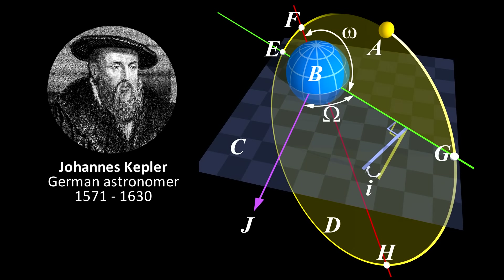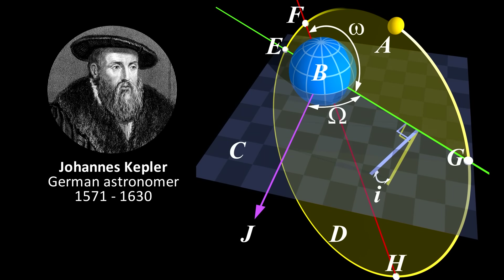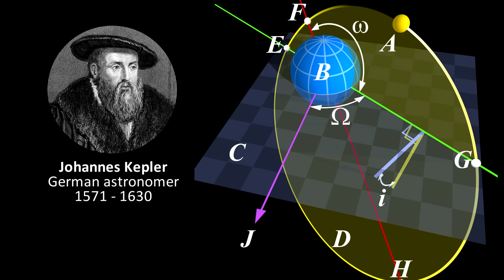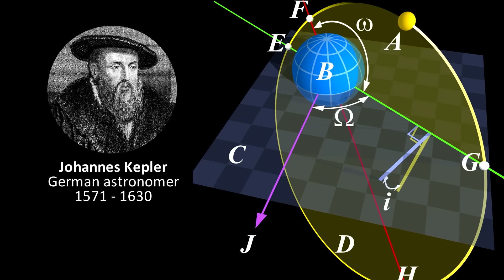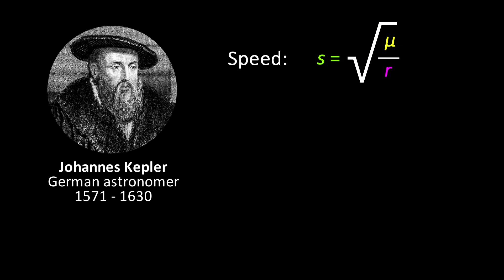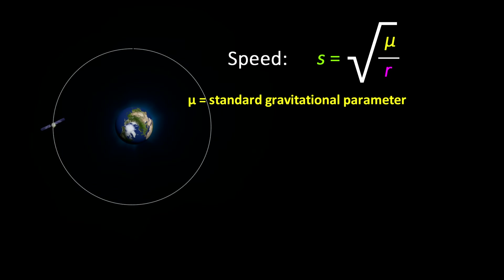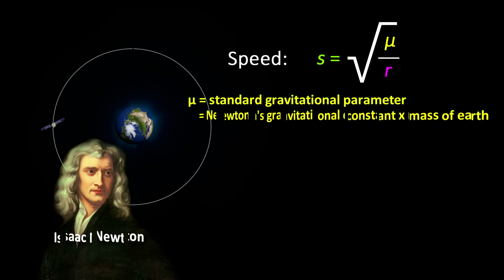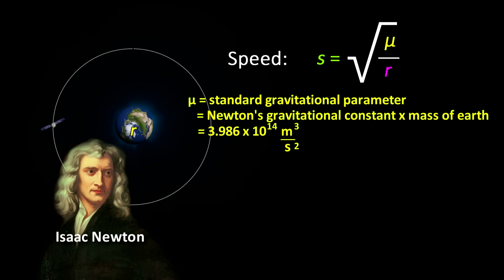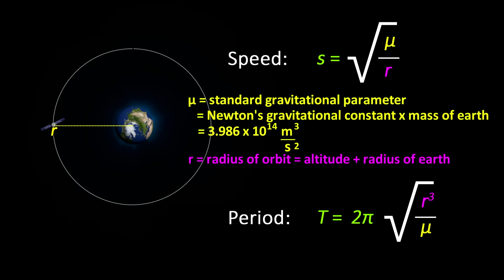Orbital mechanics is rooted in Kepler's laws of planetary motion, published way back in 1609. Newton's laws of universal gravitation, published in the Principia Mathematica around 1687, also plays a role. Kepler's laws allow us to calculate the period and speed of such a satellite. Speed is the square root of mu over r, where mu is the standard gravitational parameter — equal to Newton's gravitational constant times the mass of the planet — and r is the radius of the satellite from the center of the earth. Note that the speed and period only depend on the radius of the satellite, not on its mass.